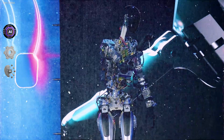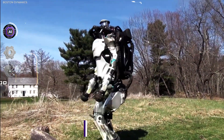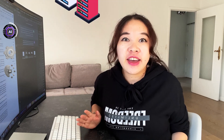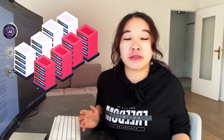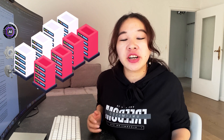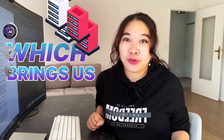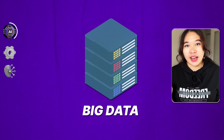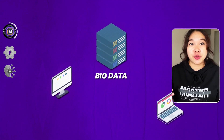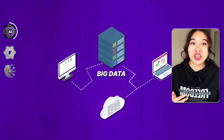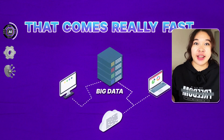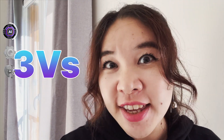AI makes machines learn and do things on their own without us telling them exactly what to do. To achieve this, AI needs a huge amount of data to train machine learning models, which brings us to some essential pieces of AI. First is Big Data. Big Data is a super huge collection of information that comes really fast from all over the place — we call it the three V's because it involves a lot of data.